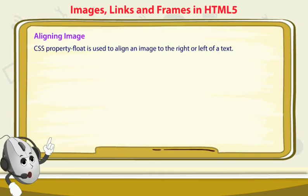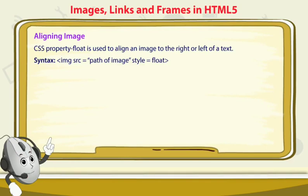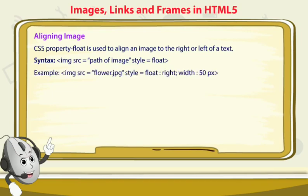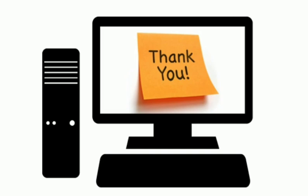To align an image, CSS provides the float property. It is used to align an image to the right or left of text. The syntax is: IMG SRC equal to the path, then STYLE equal to 'float: right' or 'float: left'. For example, you can set SRC to the path and float equal to right with a width of 50 pixels. That's it for today, students — thank you.